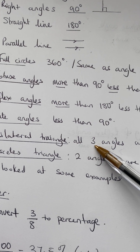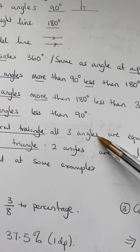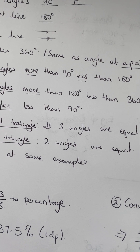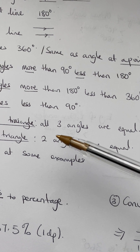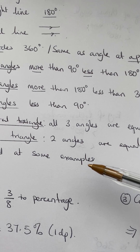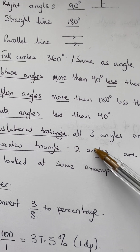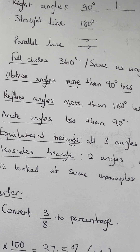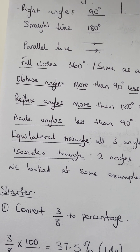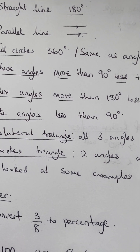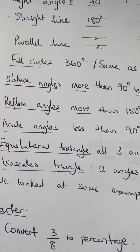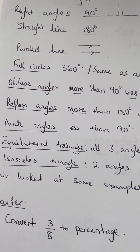An equilateral triangle has three equal angles, so each angle is 60 degrees. Watch yesterday's video for the notation. An isosceles triangle has two equal angles, shown with matching tick marks on each equal side. We looked at some simple examples, because we need to start from simple and then move to more complex ones.